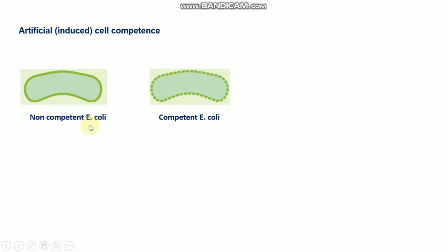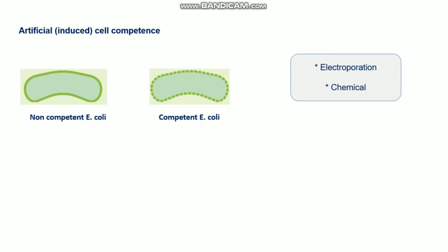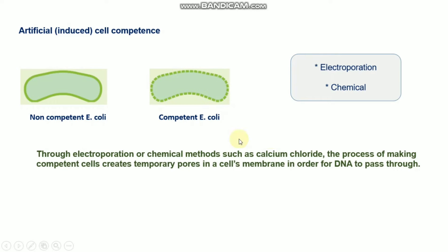As you can see in this picture, in non-competent cells the cell membrane has no pores, so it is not permeable. But in competent cells, the cell membranes contain pores, giving them higher permeability. Researchers use two different processes — electroporation or chemical treatment — to create pores in the cell membrane.